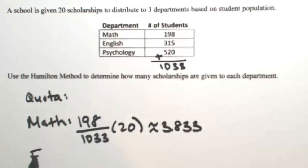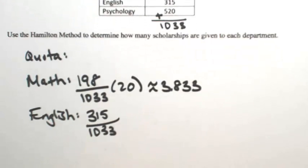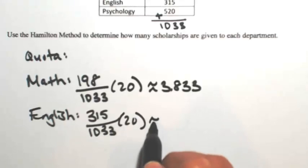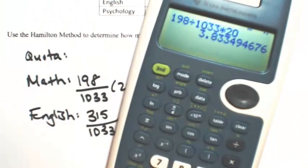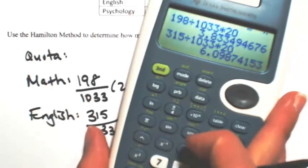Do the same thing for English. So 315 students out of the entire student population for these three departments. That gives us the percentage, and we want to take that times 20. This gives us about 6.099.